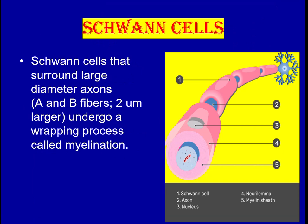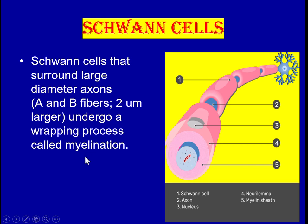Schwann cells surround large diameter axons. This sheet wraps multiple times around the axon, forming the myelin sheath, which is present around large diameter type A and B fiber neurons, which are two micrometers or larger. This wrapping process is called myelination. At the outer surface of the Schwann cell there is a nucleus, which is also called the neurilemma.